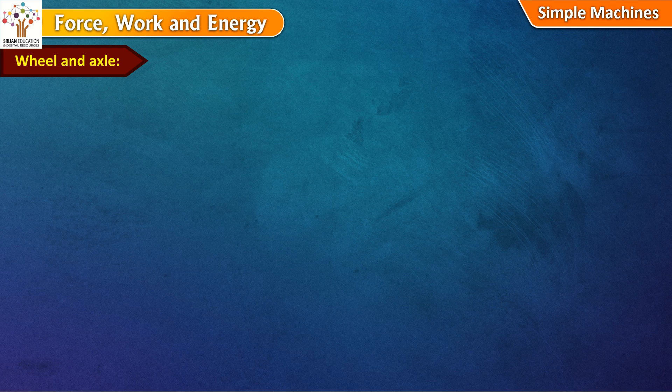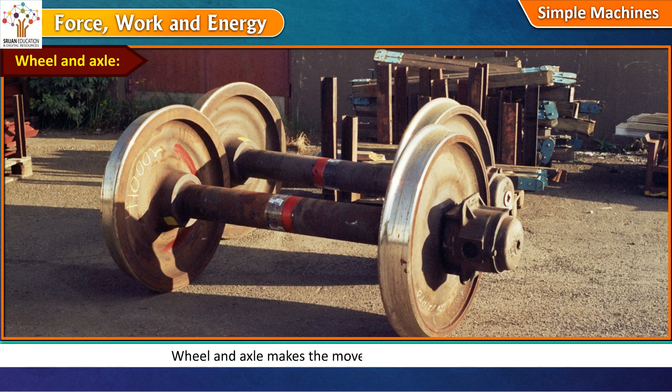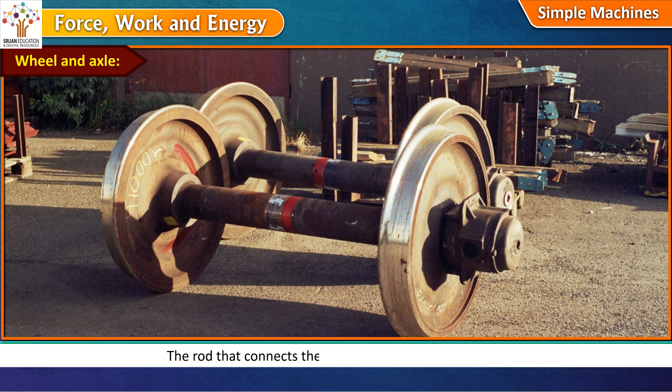Wheel and axle. Wheel and axle makes the movement of objects easier. The rod that connects the wheels of a vehicle is the axle. The axle moves the wheels.